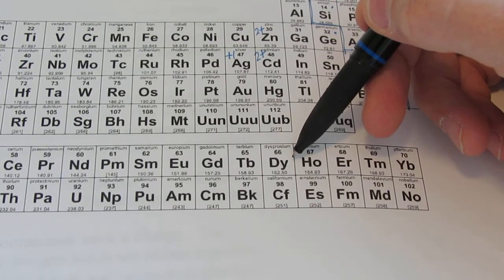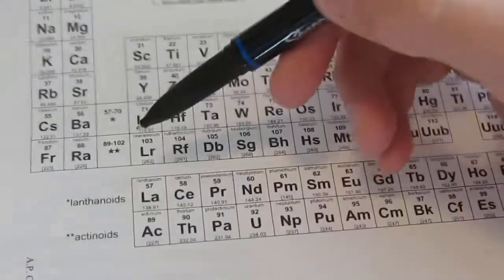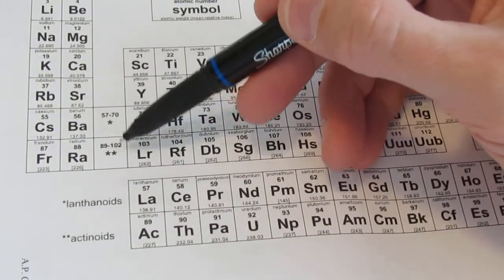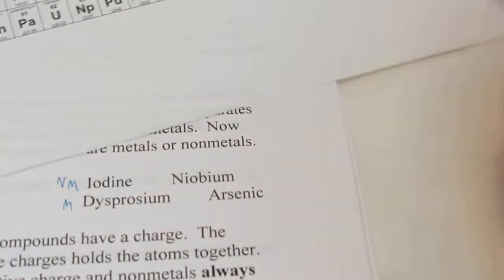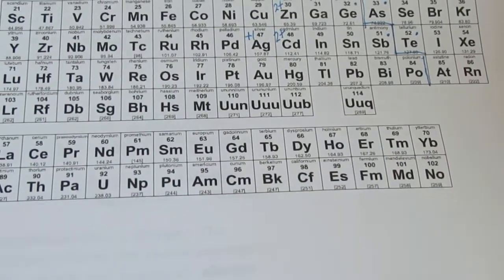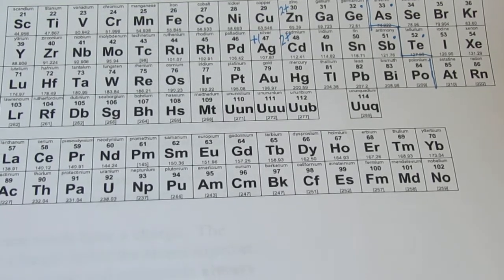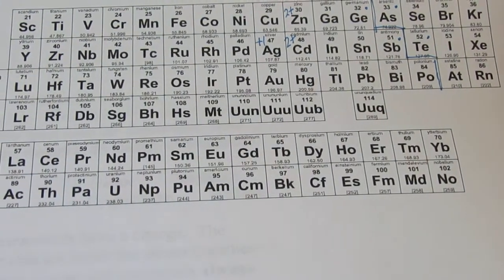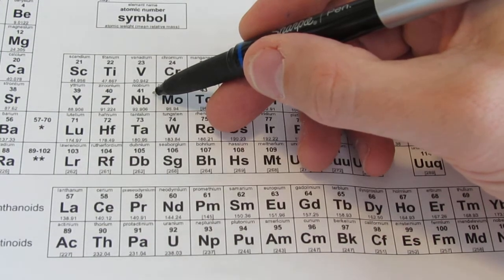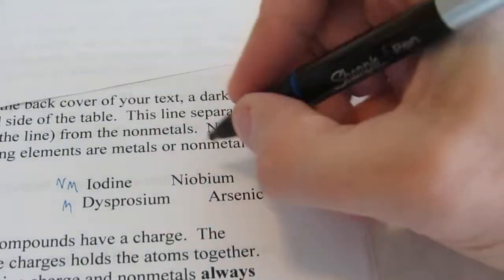Dysprosium. Now, remember, the 4Fs and the 5Fs belong in these two boxes here. So they are metals, aren't they? How about niobium? You guys find niobium? Anybody find niobium yet? Let's see. There it is. Atomic number 41. That's another metal.